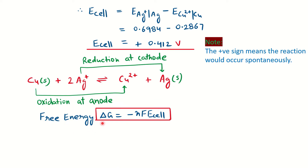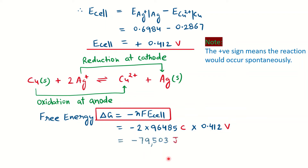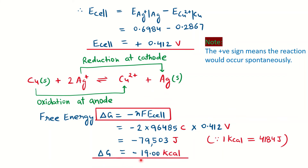To calculate the free energy: ΔG = −nFE(cell). Here n = 2 electrons (from the balanced overall cell reaction), F = 96485 C/mol, and E(cell) = 0.412 V. This gives ΔG in joules. To convert to kilocalories, use 1 kcal = 4184 J. The final result is ΔG = −19 kcal, confirming the reaction is spontaneous.